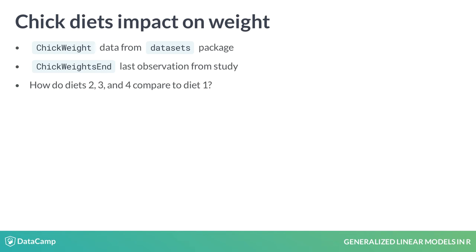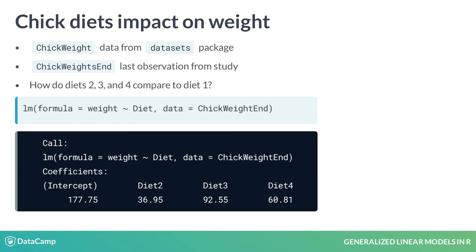Specifically, a linear model can estimate if the second, third, and fourth diets differ from the first diet. Using the linear model function, we use the formula, weight is predicted by diet, with our chick weight end data.